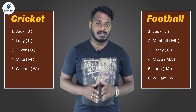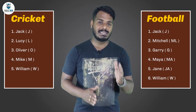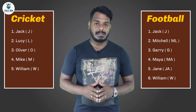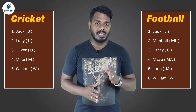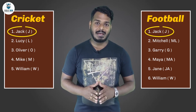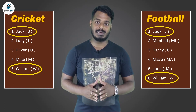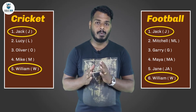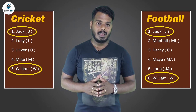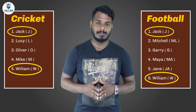He was puzzled because in all there were nine students in the class, but the list showed six plus five — that is eleven students. But on careful examination he understood the mystery. There were two names in the list, Jack and William, which were repeated in both lists — their names appeared in the cricket list as well as the football list, and that's what accounted for those two extra numbers.